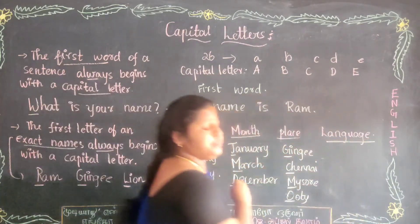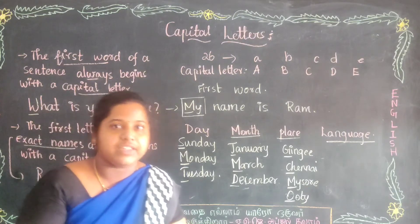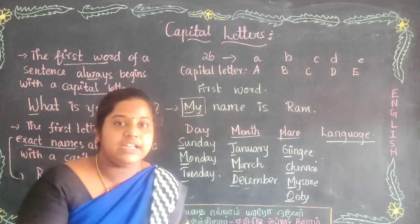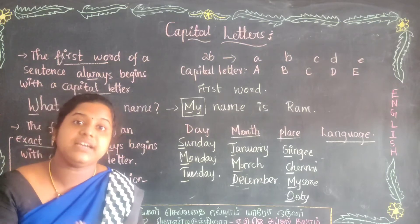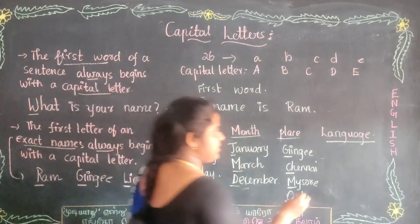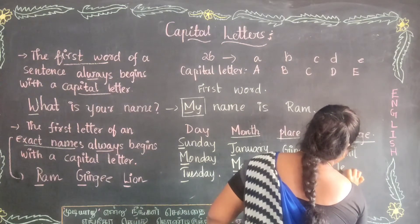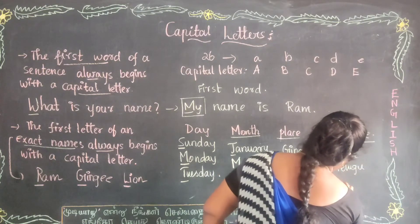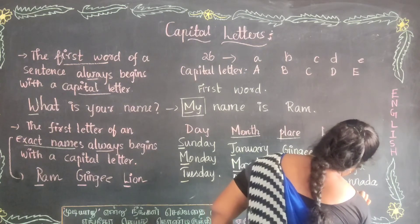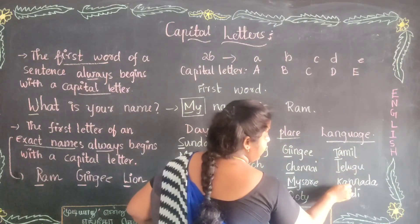We also use capital letters for languages. In Tamil Nadu, we speak Tamil. In Karnataka, they speak Kannada. In Telangana, they speak Telugu. In the north, most people speak Hindi. Punjabi and Tamil are also languages. Tamil, Telugu, Kannada, Hindi — all these words must start with a capital letter.